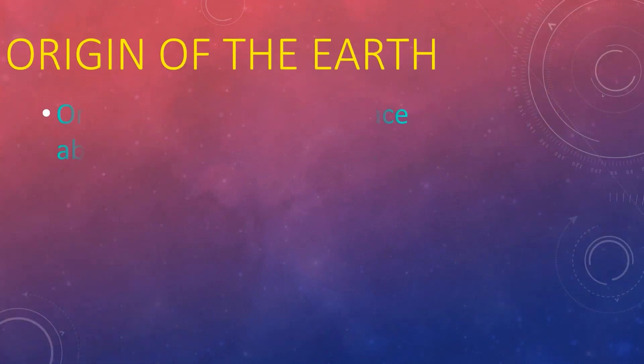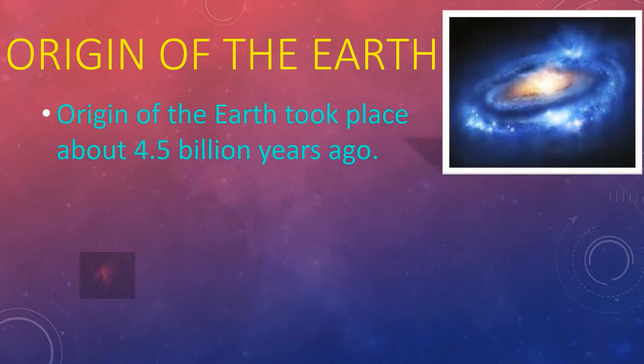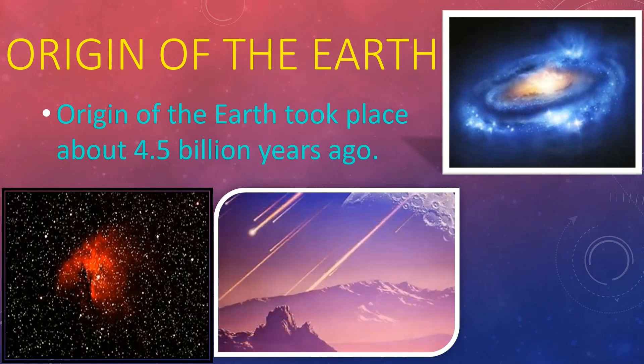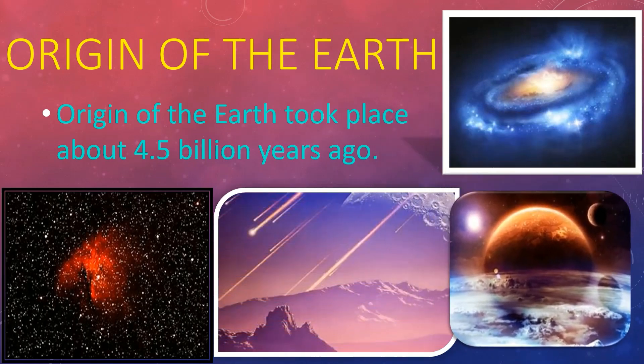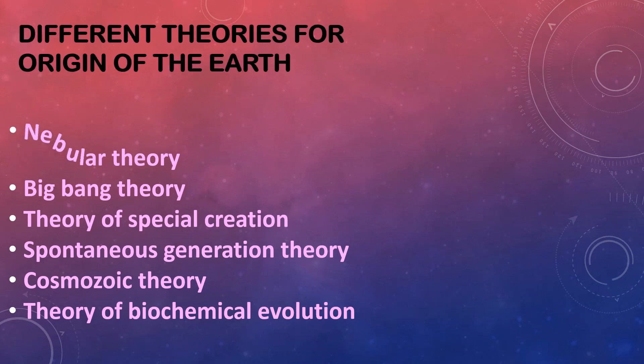First we will discuss the origin of our Earth. This Earth originated about 4.5 billion years ago. There are six kinds of theories about the origin of the Earth. They are Nebular theory, Big Bang theory, theory of special creation, spontaneous generation theory, cosmozoic theory, and theory of biochemical evolution.